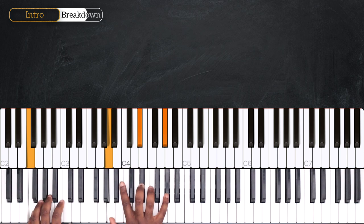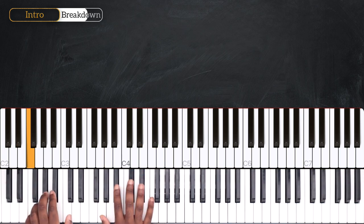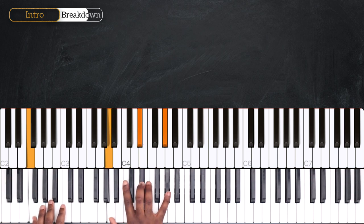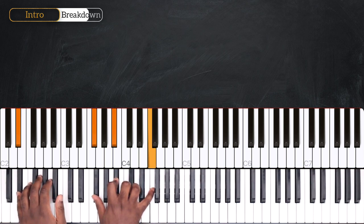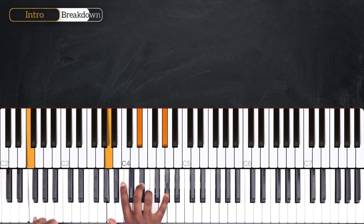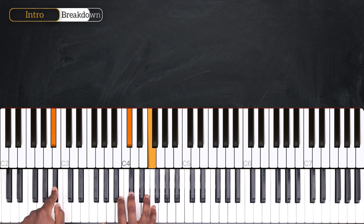Let's continue. So, I played F7 sharp 9, Eb minor 9, F7 again, and then Bb minor.